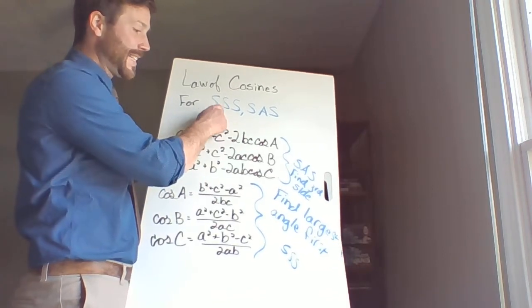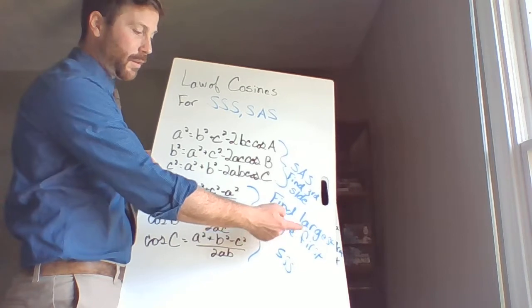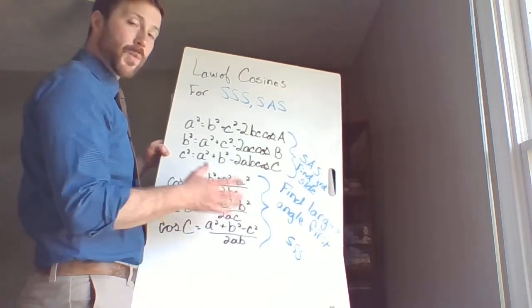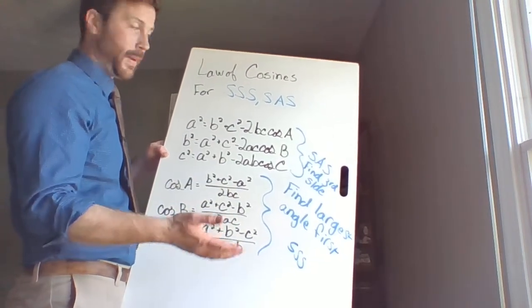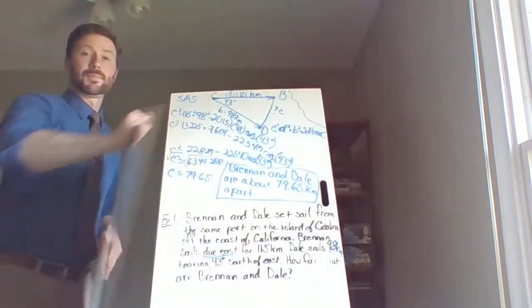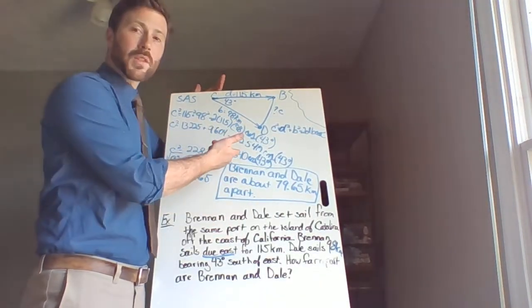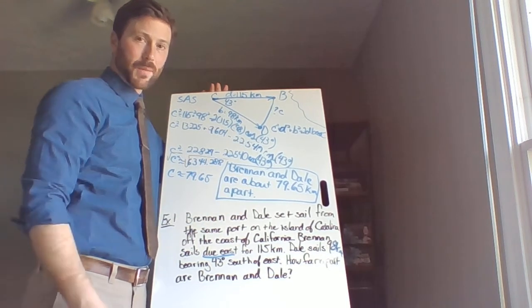If we're given side, side, side, we need to find an angle. And we want to find the largest angle first. It's going to be opposite the largest side. Once we have a pair of opposite measures, we can shift over to law of sines if we need to solve the rest of the triangle. But if we're just asked to find a single value, we can stop right there. We found that side that we were looking for. That's the answer that we want.